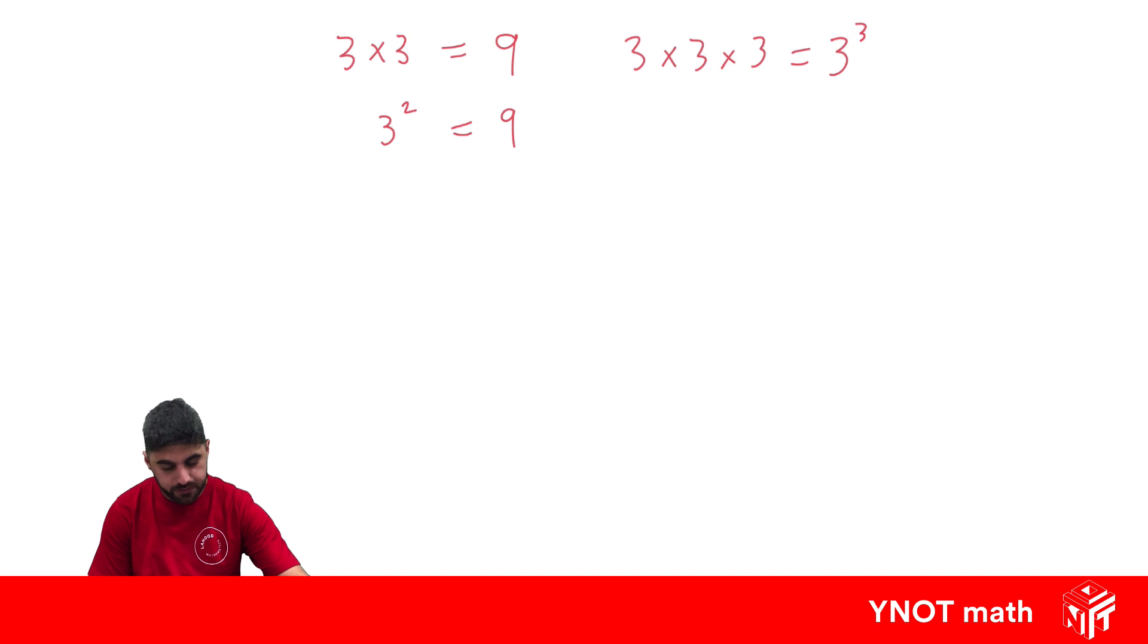And the same goes for pronumerals. If we have x times x, very similar looking to this one up here, 3 times 3 is 3 squared. So x times x is x squared. x times x times x is x cubed.